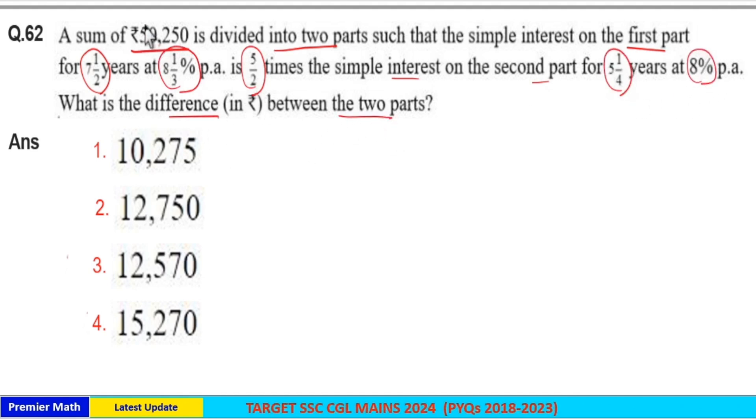Here the sum is divided into two parts. Simple interest on the first part means for one year it is 25/3 percentage of the principal. Then for 15/2 years it is 15/2 into 25/3 percentage of principal one. This is equal to 5/2 times the interest on